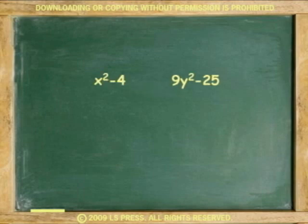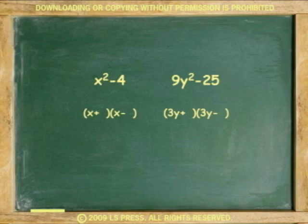To factor a difference of two squares, set up two binomials in parentheses: one separated by addition and another separated by subtraction. Place the square roots of the first square to start each parenthesis, and the square roots of the second square to end each parenthesis.